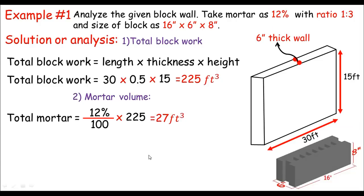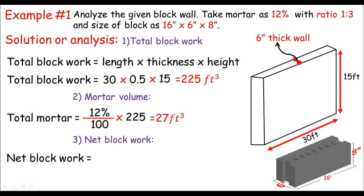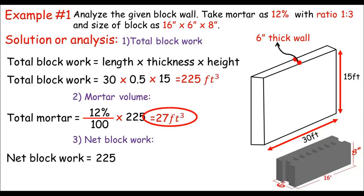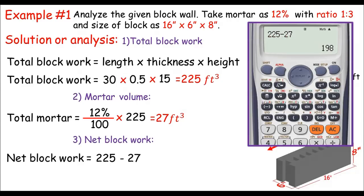When we have the total mortar, by subtracting this mortar from the total block work, we get the net block work. So net block work = 225 cubic feet − 27 cubic feet = 198 cubic feet.